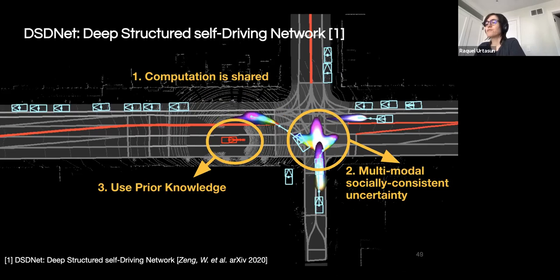To address these limitations, we propose DSDNet, a deep-structured neural motion planner that jointly reasons about perception, forecasting, and motion planning. Specifically, our network has several advantages. First, computation is shared between modules. Second, our method explicitly models socially consistent multi-modal uncertainties in the future trajectories of the traffic participants. And finally, our learning-based planner leverages the power of deep learning and takes traffic rules into consideration as well in order to guarantee safety.